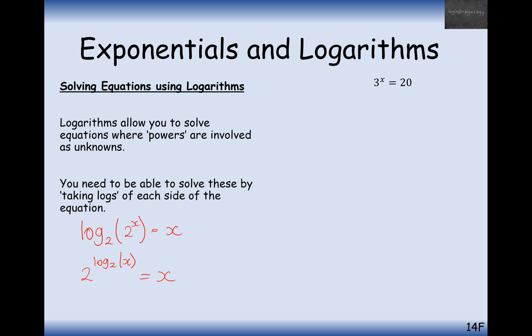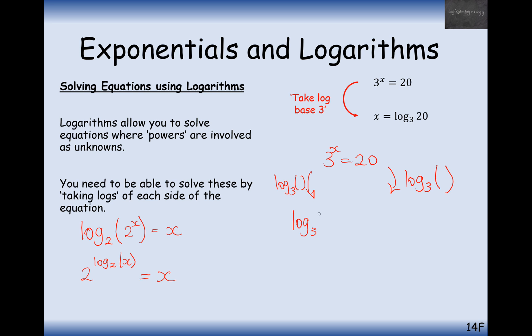Let's have a look at this question. What we need to do here is 3 to the power of x equals 20 — find the value of x. What we're going to do is take log of the base number 3, and that will do the inverse of 3 to the power of x. So it's just x equals log base 3 of 20. Effectively, we had log base 3 of 3 to the x equals log base 3 of 20, and log base 3 of 3 to the power of x is just x.